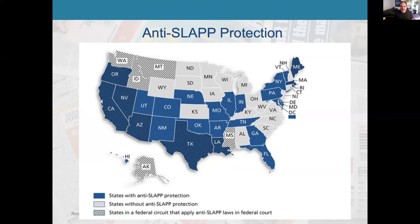Basically, this is to discourage frivolous lawsuits and also to discourage big corporations. For example, if McDonald's threatened to sue everyone who said anything negative about them, that would skew press coverage and the courts want to prevent that — prevent people with a lot of money from basically steamrolling other people. Now, anti-SLAP laws make sense, but there are some people who believe that it actually interferes with federal rules of civil procedure and that these anti-SLAP provisions should not exist.